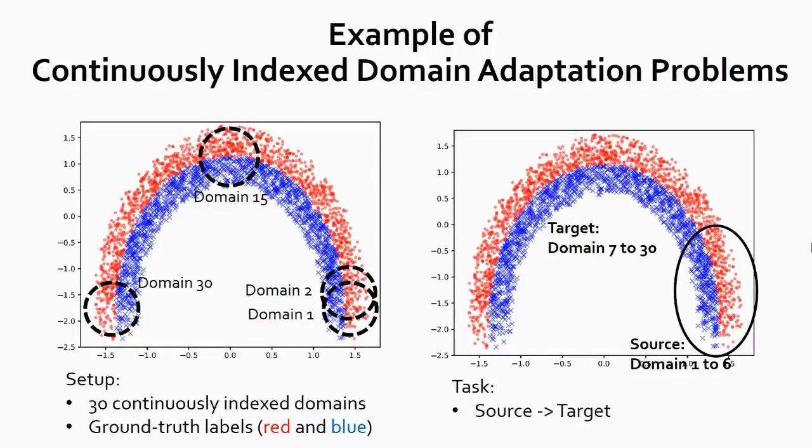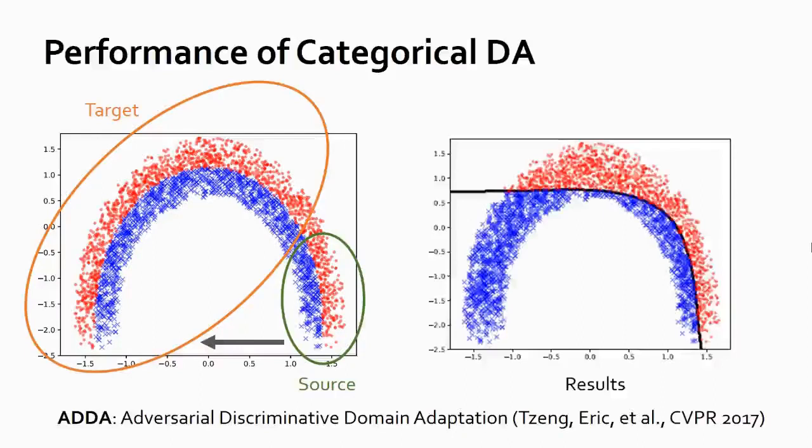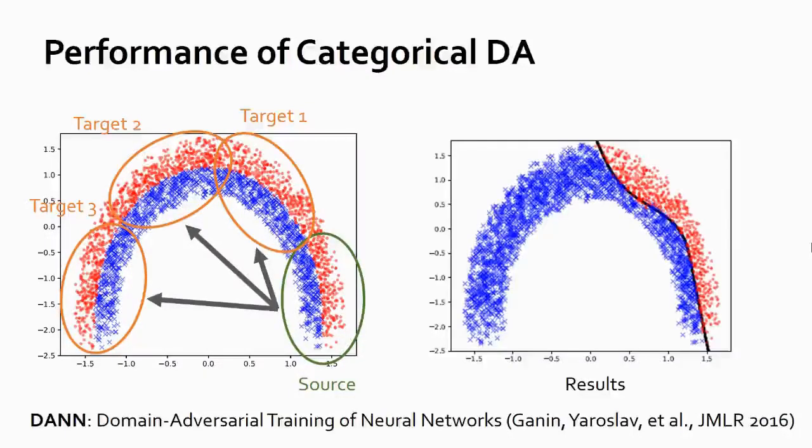Let me first show you some examples of applying categorical domain adaptation methods. We can use a method called ADA, which treats all source domains as one single source and all target domains as one single target, and then apply one-step adaptation. We can see that the model does not generalize at all. Another idea is to use DANN, which divides the target domain into smaller paths and apply one-to-many adaptation. That does not work either.